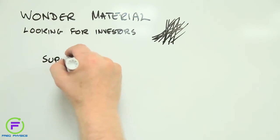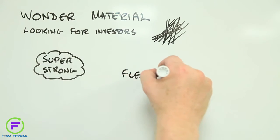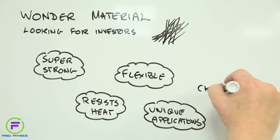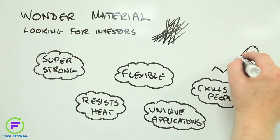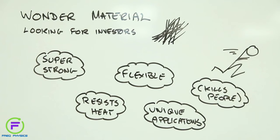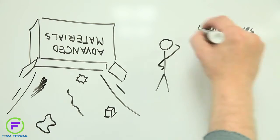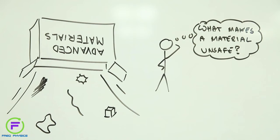The last thing we need is a wonder material that ends up causing disease or harming the environment. It's not good for the people it affects and it's certainly not good for business. But how do we know what makes an advanced material potentially dangerous and how future risks can be avoided? To answer that, we need to start with what we know about what makes any material risky and build up from there.